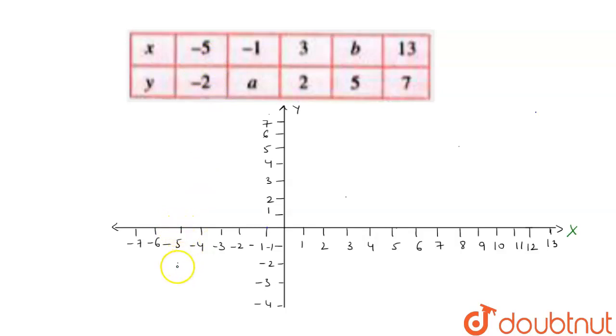So our x is -5 and our y is -2, so this point will be -5, -2. Next is 3, 2, so this will be our 3 and 2 will be here. This will be 3, 2. And this is 13, 7, so this is our 13.